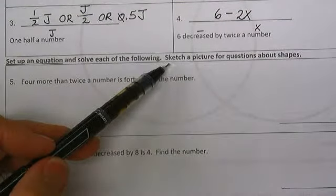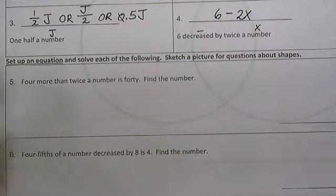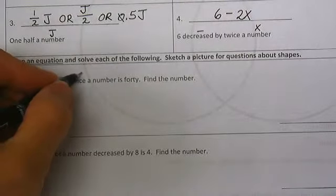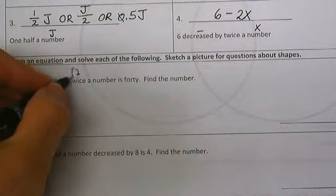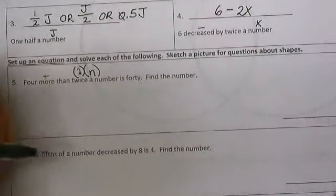Number 5: Four more, that means add, twice a number, that means multiply times 2, and that is equal to 40. Find the number.